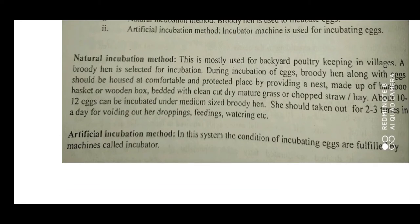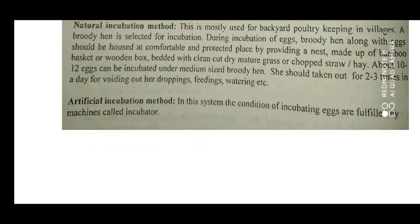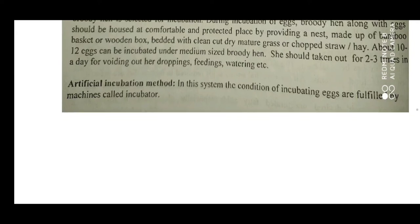The natural incubation method is most used for backyard poultry keeping in villages. A broody hen is selected for incubation. During incubation, the broody hen along with eggs should be housed in a comfortable and protected place, with a nest made of a bamboo basket or wooden box bedded with clean, dry grass or straw. About 10 to 12 eggs can be incubated under a medium-sized broody hen. She should be taken out 2 to 3 times a day for droppings, feeding, watering, etc.